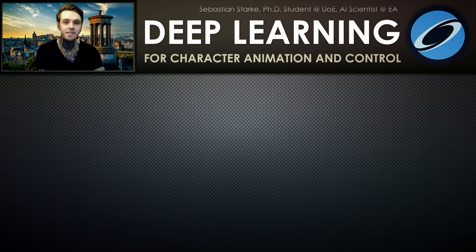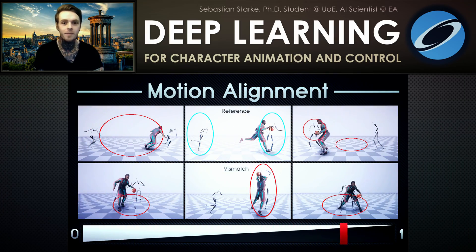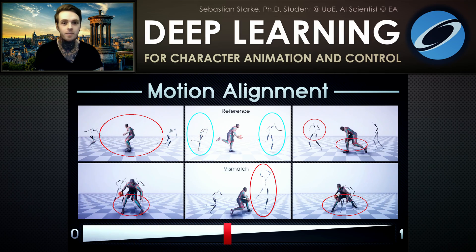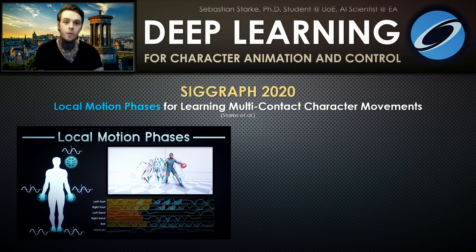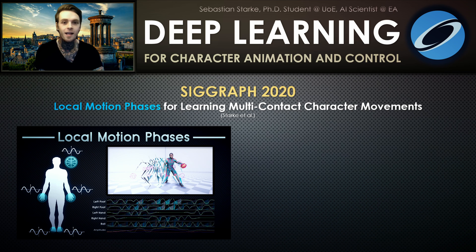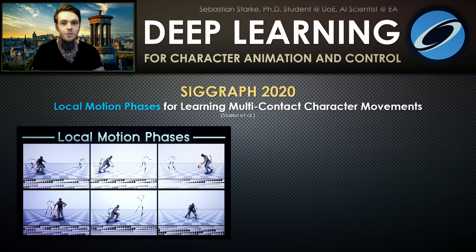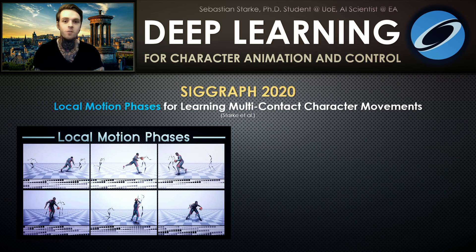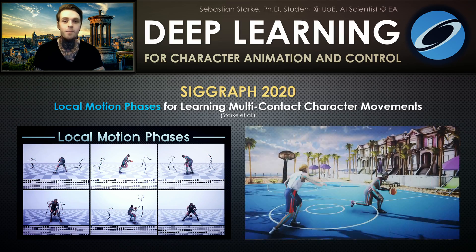However, a remaining key limitation was that defining global phases can be tough or sometimes strictly not possible. So this year at SIGGRAPH 2020, we are introducing the concept of local motion phases and instead aligning character movements at bone level in an asynchronous manner. And suddenly we can extract a phase space from complex and unstructured motion data without any manual labeling.